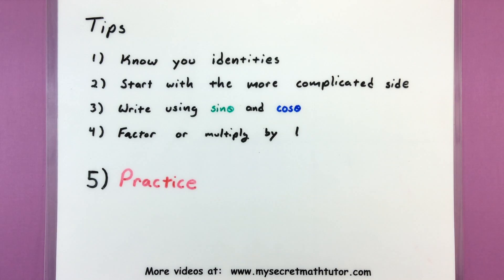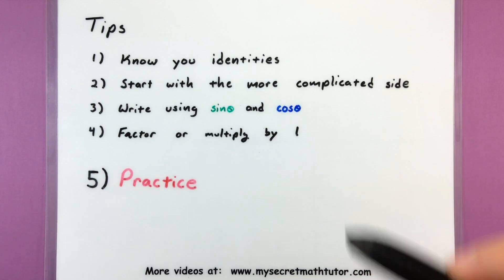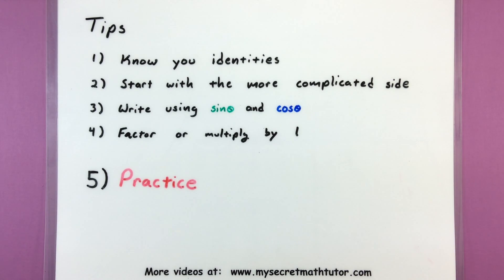You can also write things using only sine and cosine. That usually helps us figure out any relationships that we might see because then we don't have to use quite as many identities. It can also reveal things that maybe need to be cancelled out or simplified since now we're only dealing with two trigonometric functions instead of all six of them.